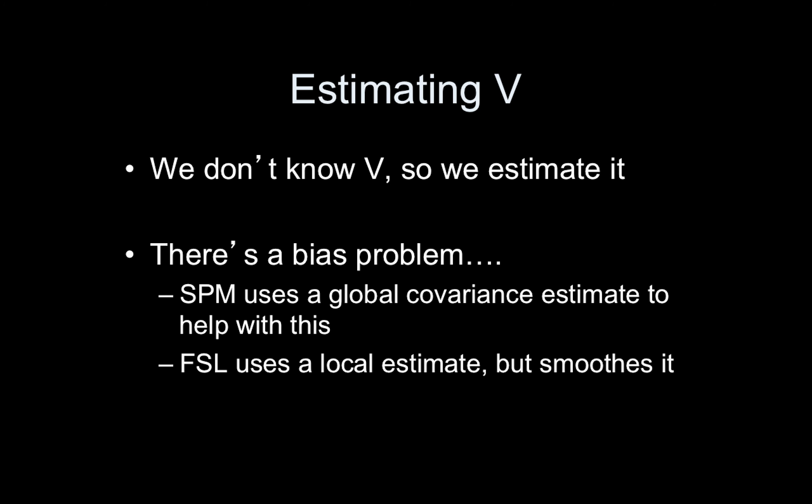There are various ways to fix this bias problem. SPM uses a global covariance estimate — it pools over all voxels so the same V is used across all of space. You might think that's horrible because V might change over space, but it's a trade-off: a less biased estimate that's the same across the brain versus a voxel-wise estimate that's very noisy. FSL, on the other hand, uses a local estimate but smooths it — using neighboring voxels to stabilize the estimate.